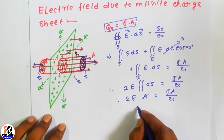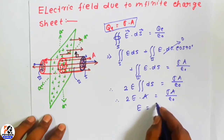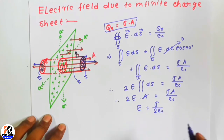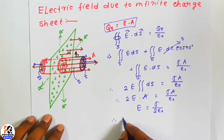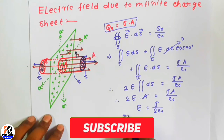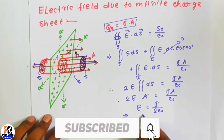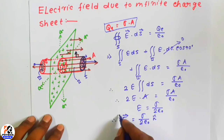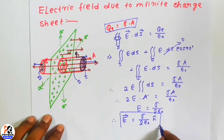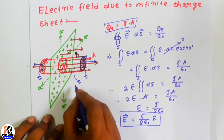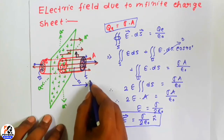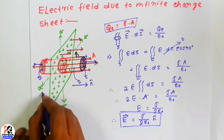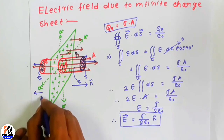So it becomes 2E equal to sigma·A divided by epsilon naught. A and A cancel, and we get E equal to sigma divided by 2 epsilon naught. In vector notation we can write E equal to sigma divided by 2 epsilon naught times n-hat, where n-hat is the outward normal — in this direction on this side and in the opposite direction on the other side.